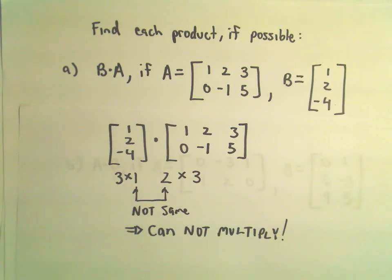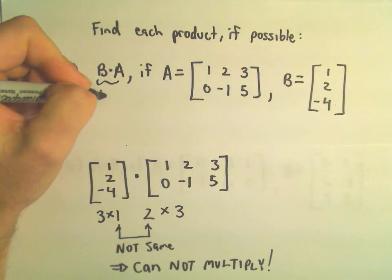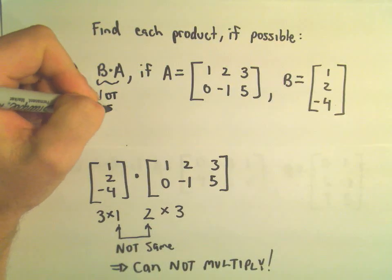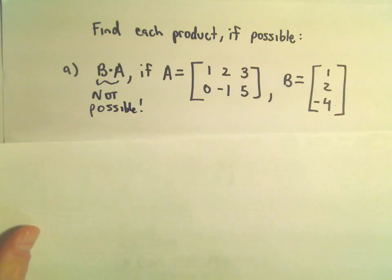Okay, so maybe kind of a lackluster first example here, but we simply can't multiply these matrices in the order that they're given. Okay? We could actually do A times B, so I don't think that was on here. There was a second example. Let's go ahead and calculate A times B, though. So B times A, this is simply not possible. Let's reverse the order.